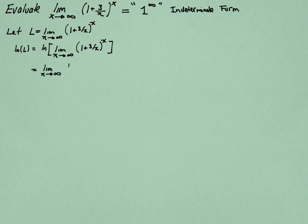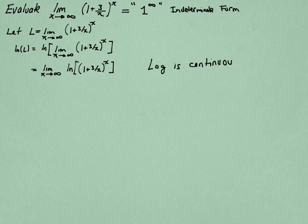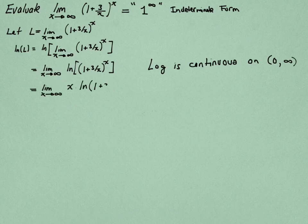Now, because the logarithm is a continuous function, I'm allowed to bring that ln inside the log. So the log of the limit is the limit of the logarithm of that expression. And again, that's because the log is a continuous function. One of the properties of logarithms allows me to take the exponent x inside the log and bring it out as a factor. So this becomes x times the log of 1 plus 3 over x.